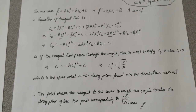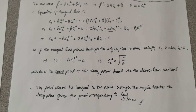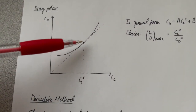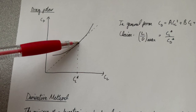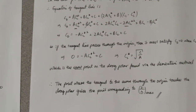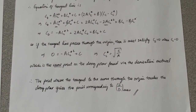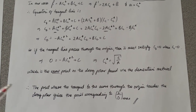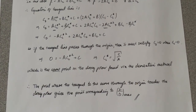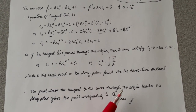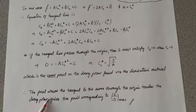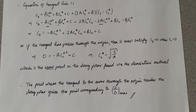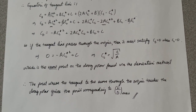Therefore, my claim is verified: the point on the drag polar corresponding to the best lift-to-drag ratio is the point where the tangent line first touches the drag polar from below through the origin. Because the CL* value came out the same using both methods, the tangent line method and derivative method are equivalent. Hopefully that clears up a few things — have a good night.